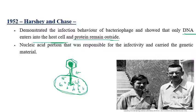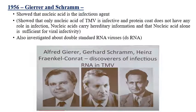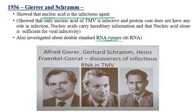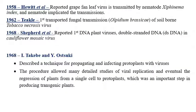Gierer and Schramm conclusively showed that nucleic acid is the infectious material of plant viruses. They demonstrated that only the nucleic acid of TMV — and plant viruses in general — is the infectious portion. They also investigated double-stranded RNA viruses. This is a very important contribution frequently asked in examinations.